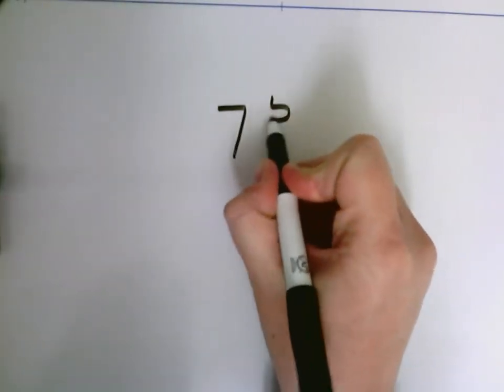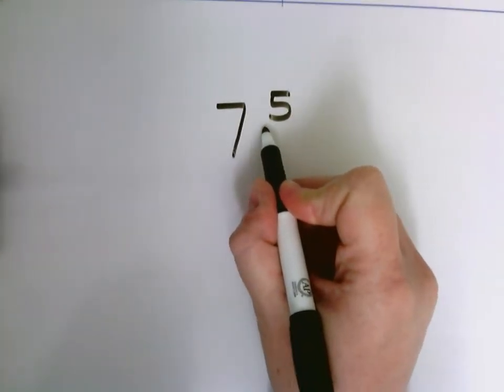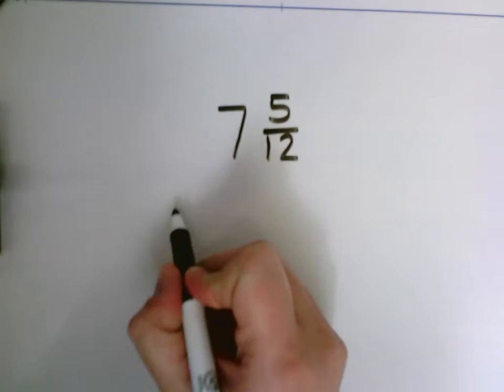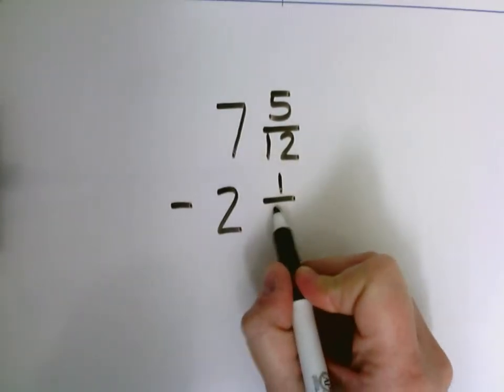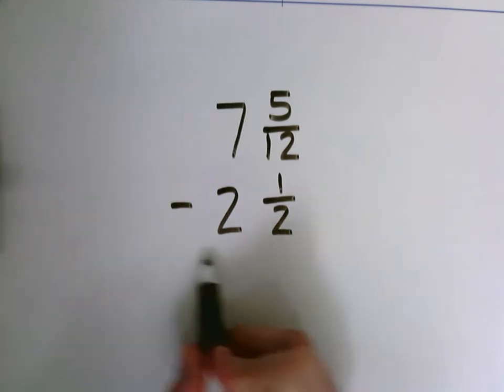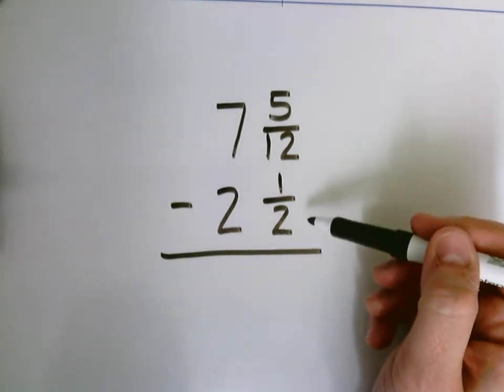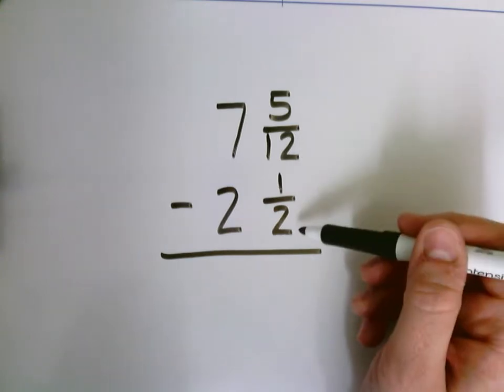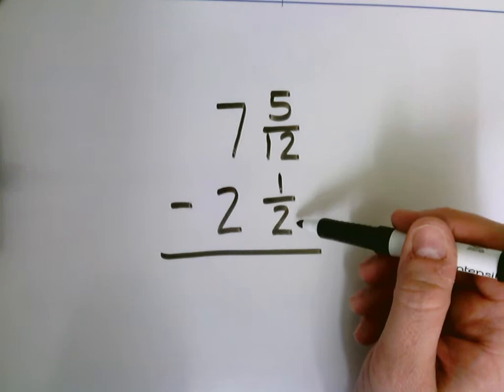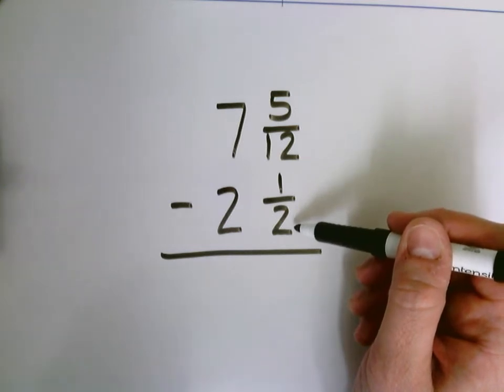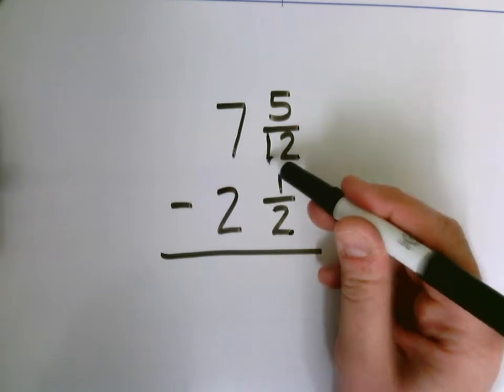7 and 5 twelfths minus 2 and 1 half. So here are our two fractions, 7 and 5 twelfths minus 2 and 1 half. So I see that I do not have like denominators, so I need to find a common denominator first. To find a common denominator, we're going to find multiples that the two denominators have in common.